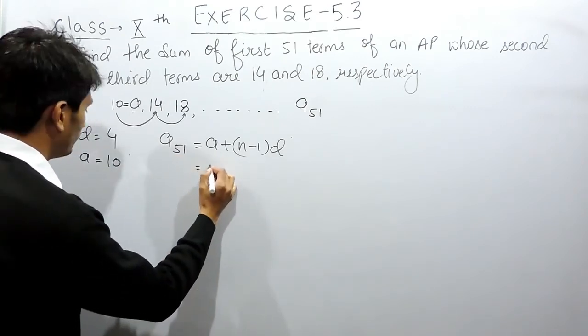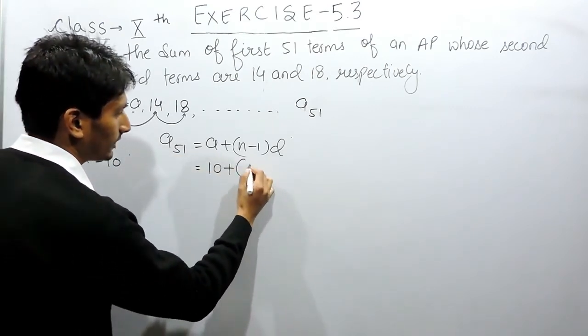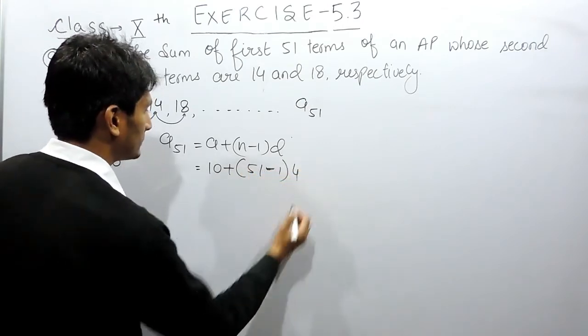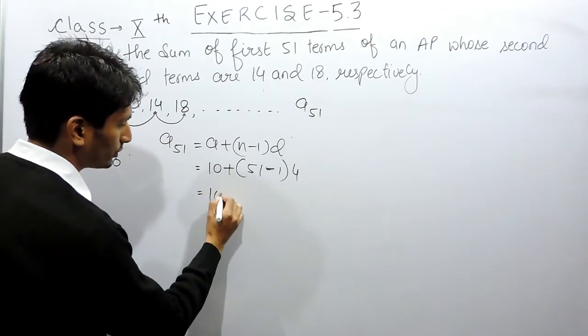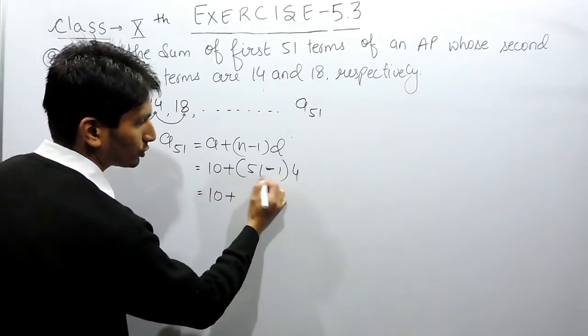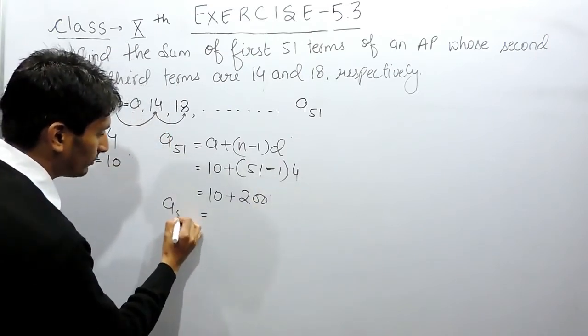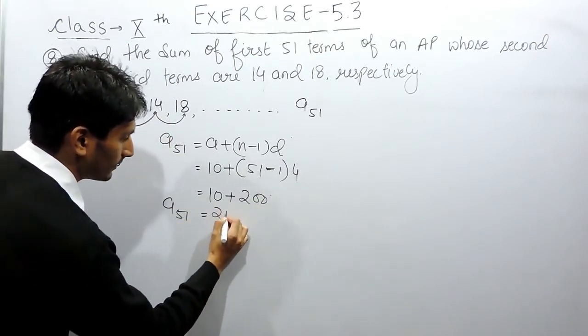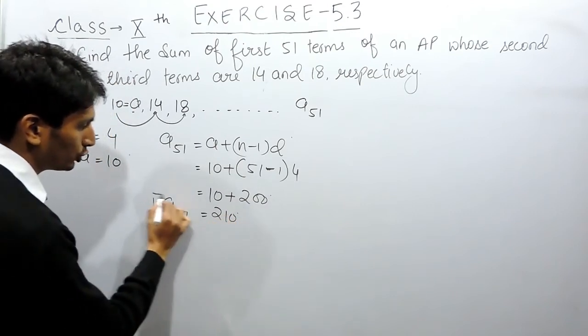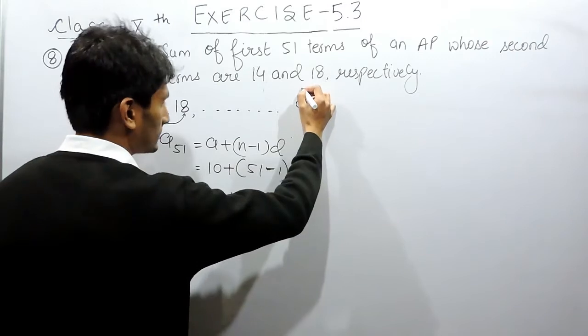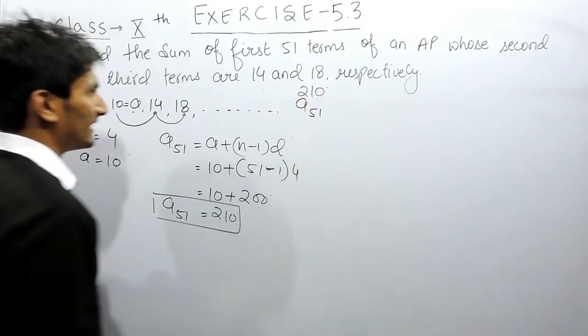So first term is 10. The number of terms are 51 and the common difference here is 4. So this will be equal to 10 plus, this will be equal to 50 and 50 into 4 is 200. So the 51st term should be equal to 210. So the last term here is 210 of this AP.